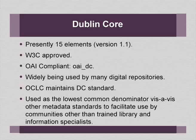Dublin Core is the most popular metadata schema on the web. Presently it has about 15 elements, it is version 1.1, World Wide Web Consortium approved it, and it is OAI compliant. In OAI-PMH, we refer to it as OAI-DC. It is widely used in digital repositories. OCLC maintains the DC standard and it is used as the lowest common denominator vis-à-vis other metadata standards, to facilitate use by communities and non-trained library and information specialists.